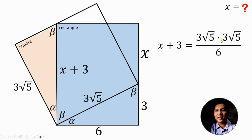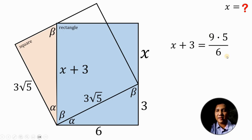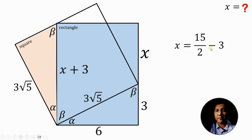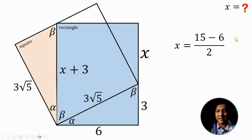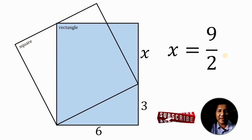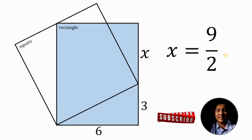Now let's simplify and solve for x. Multiplying both sides by 3 times square root of 5: 3 times square root of 5 times 3 times square root of 5 gives us 9 times 5. Now 9 and 6 have a common factor of 3, so dividing gives us 3 and 2. So x plus 3 equals 15 over 2. Subtracting 3 from both sides: x equals 15 over 2 minus 3, which is 15 minus 6 all over 2. And 15 minus 6 is 9. Therefore, the value of x is 9 over 2.